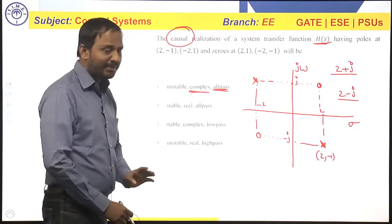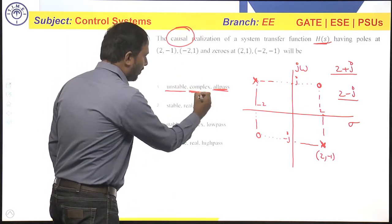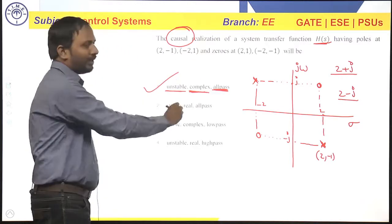So, this cannot be a stable system. So, unstable. So, unstable, complex and all-pass, these three are satisfied. So, option 1 becomes your answer.